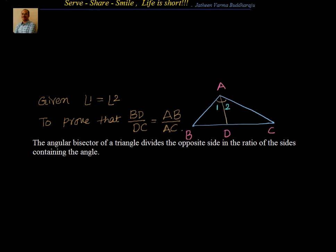What does the basic proportionality theorem tell us? It says that if a line is drawn parallel to one side of a triangle, then that line divides the other two sides in the same ratio. That means I need to have parallel lines. If I have parallel lines then only I can go ahead with the basic proportionality theorem, and we don't see any parallel line here.